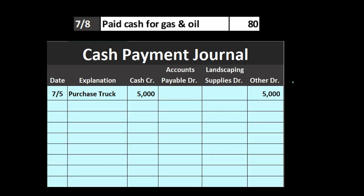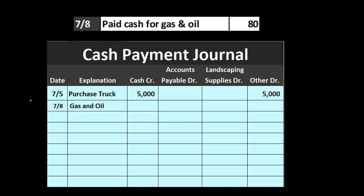The next transaction: paid cash for gas and oil, $80. Anything that says 'paid cash' belongs in the cash payment journal. On 7-8, we record 'gas and oil' — cash is always going down, so we always credit the cash column in the cash payment journal. The other side goes to 'other' because the cash payment for gas and oil is possibly not the most common transaction; if it were, we would break out a separate column for it.